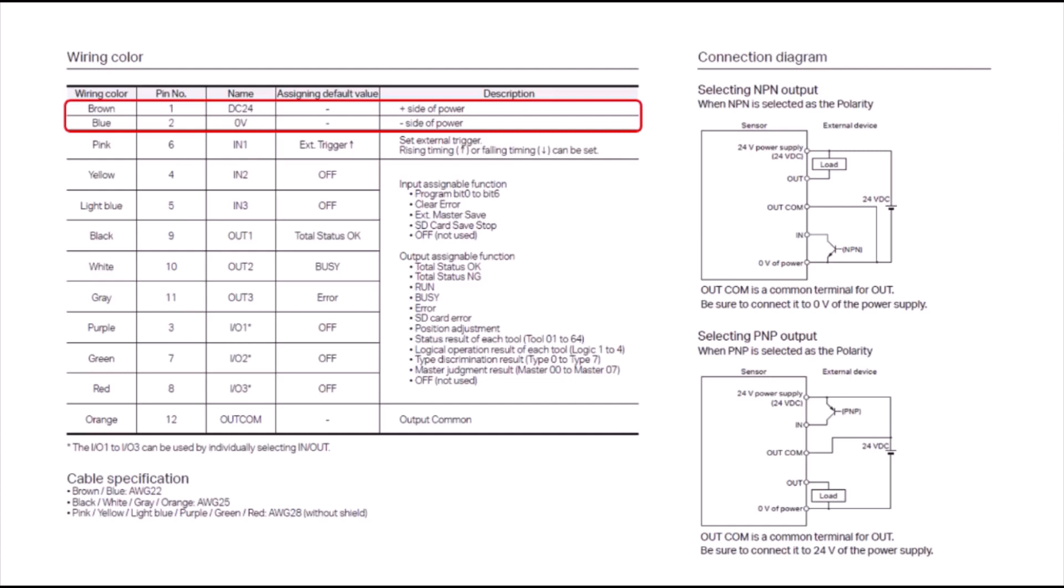To start, we're going to look at the brown and the blue wire for our power. Brown is going to connect to the 24-volt side of your power supply, and blue is going to connect to the 0-volt side of your power supply.